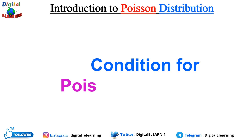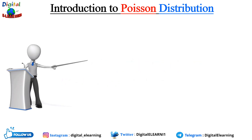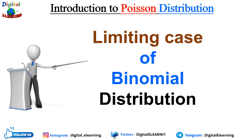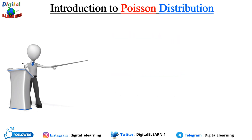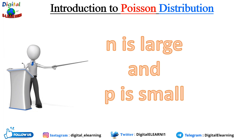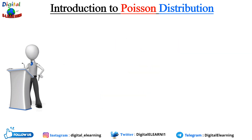The Poisson distribution is derived as a limiting case of binomial distribution under certain conditions: when the number of trials n is large and the probability of success in each trial p is small, the resulting distribution approaches the Poisson distribution. To apply Poisson distribution, certain conditions must be met.